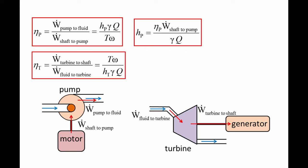The power transferred from the turbine through the shaft is the shaft torque times the shaft's angular speed. The power transferred from the fluid to the turbine is equal to the turbine head, HT, times the specific weight, times the volumetric flow rate.